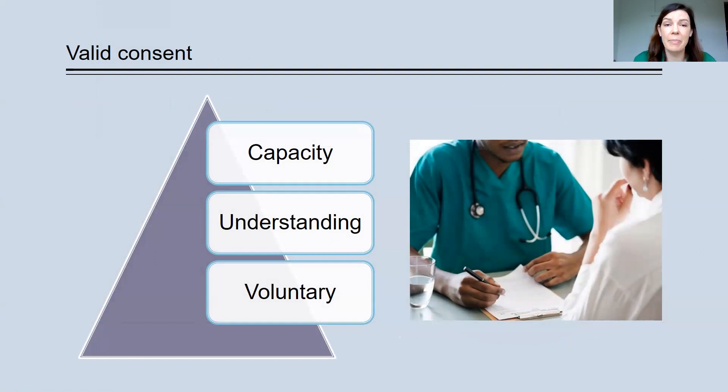So capacity is the ability to make decisions and it's decision specific. So sometimes someone might not have capacity to make a medical decision or a decision to participate in research if that research is really risky, but they might still retain capacity to make decisions about low risk research, for example, filling in a questionnaire, donating blood. So it's important to understand that capacity is decision specific rather than a global assessment.